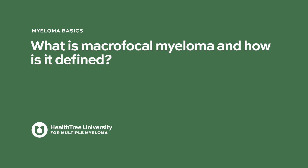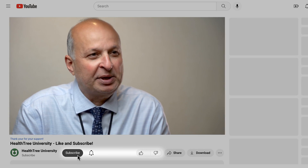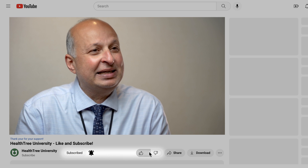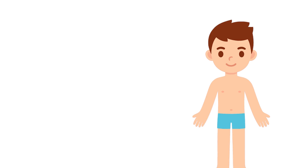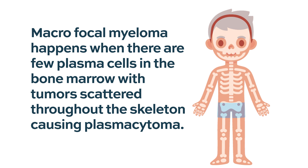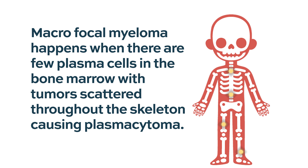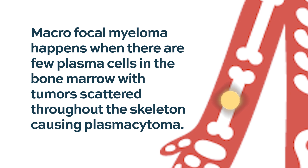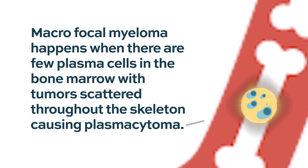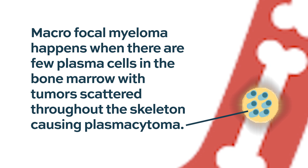Macrofocal myeloma is another very undefined area. The imaging modalities we started doing, like MRIs and PET scans, started to find a disease pattern not defined before — a patient that has very few or no plasma cells in the bone marrow, but tumors scattered throughout the skeleton formed of plasma cells, called plasmacytoma. They are usually more than one, and that's why it's called multifocal.